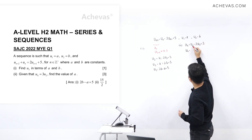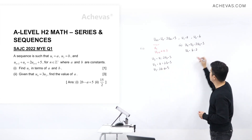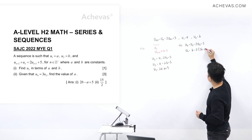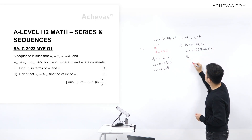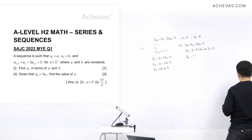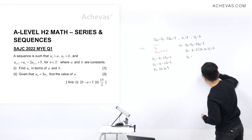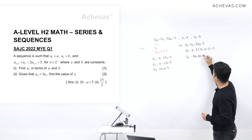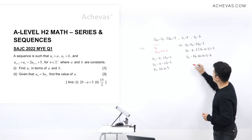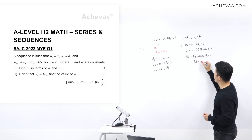So u4 plus u2, which is b, equals 2 times u3 plus 5. Since u3 equals 2b minus a plus 5, this becomes 2(2b minus a plus 5) plus 5. That gives u4 plus b equals 4b minus 2a plus 10 plus 5. Therefore, u4 equals 4b minus b minus 2a plus 15, which simplifies to 3b minus 2a plus 15.